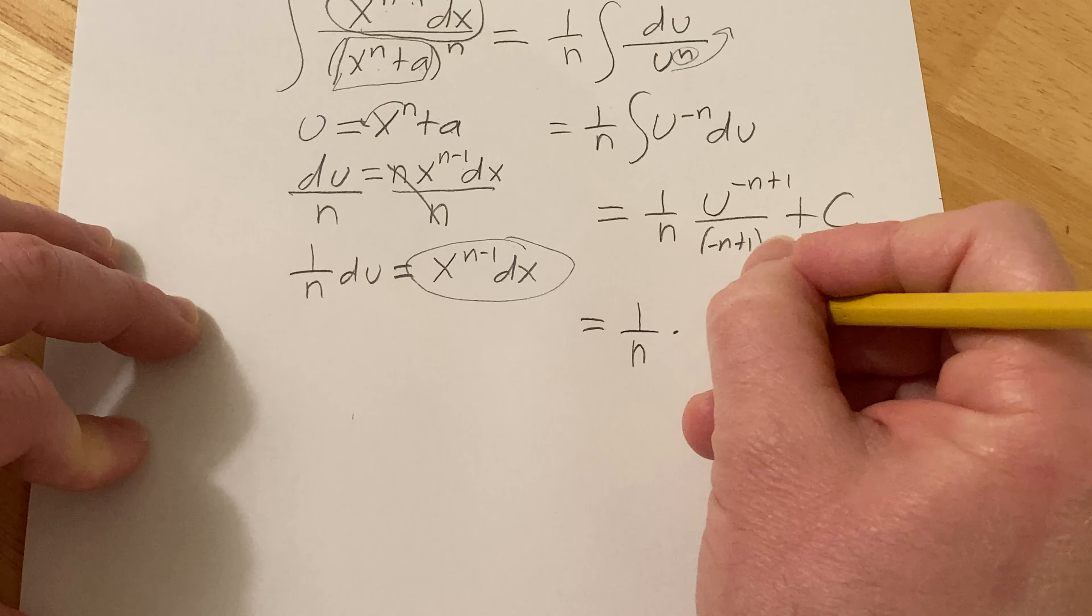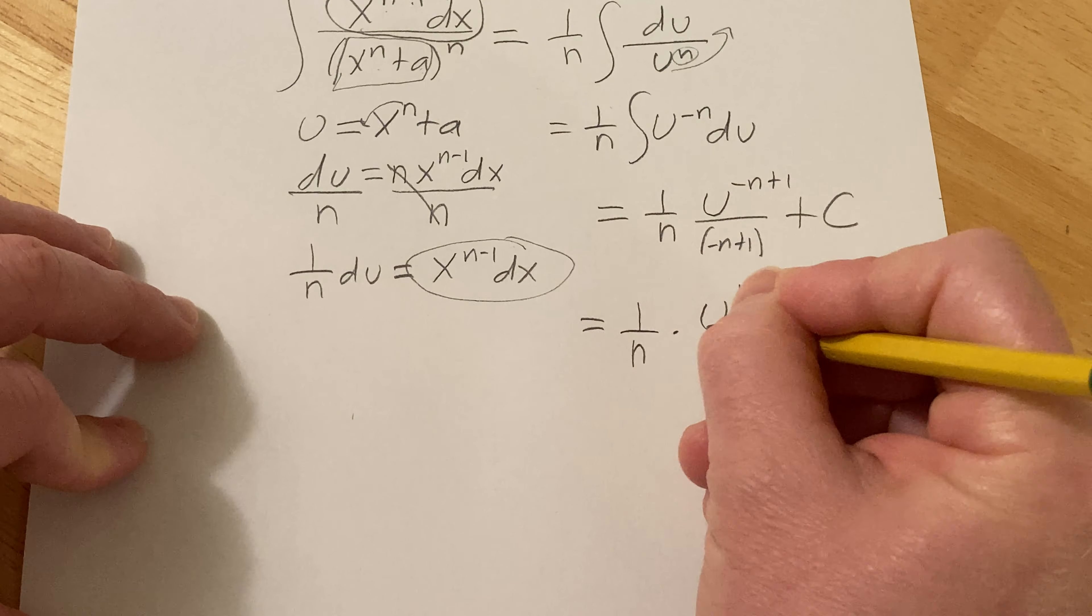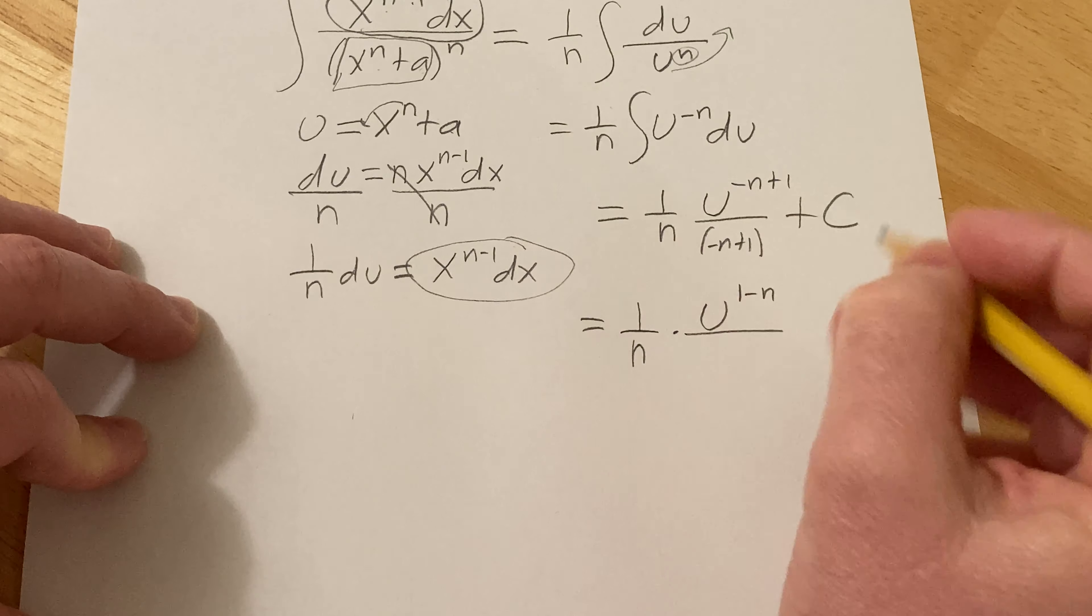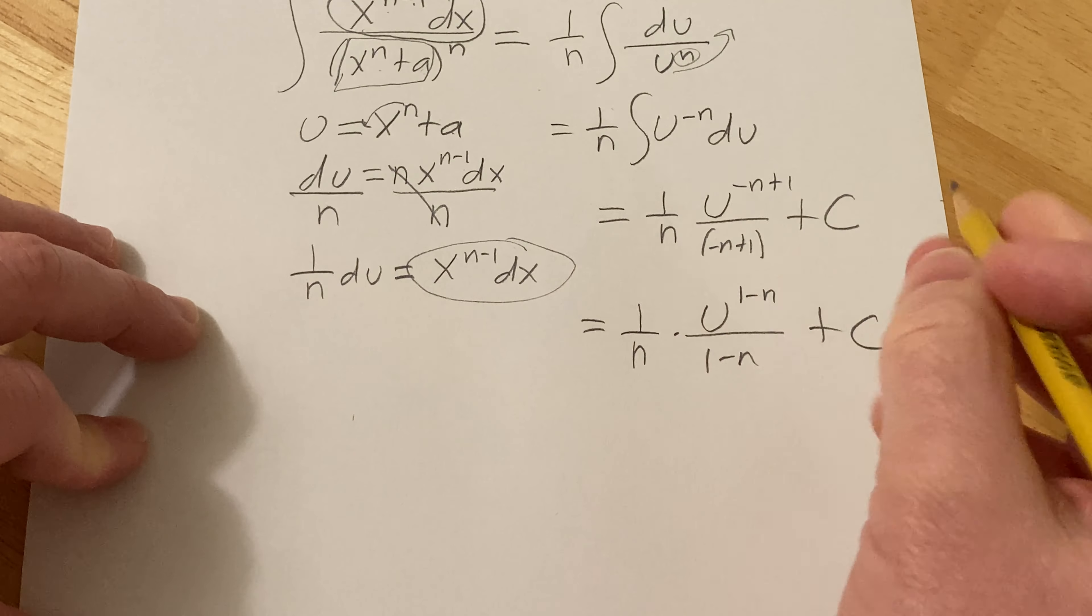So before I bring it down I'm going to write it like this just to make it a little more clear. This is 1 minus n. Maybe I'll just leave it like that. And this is 1 minus n plus c.